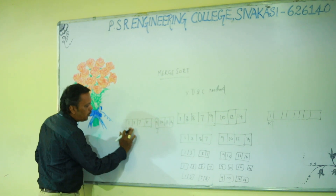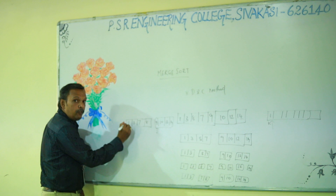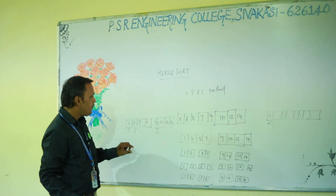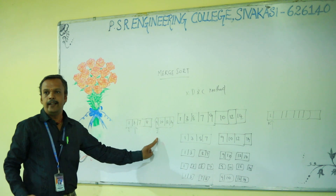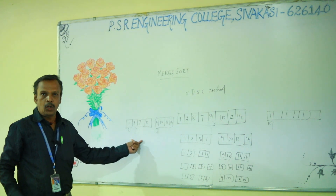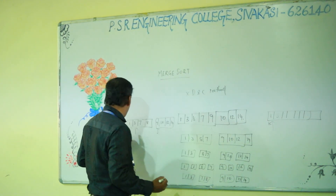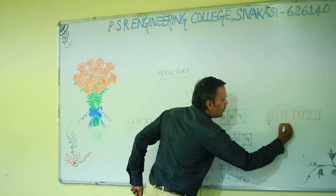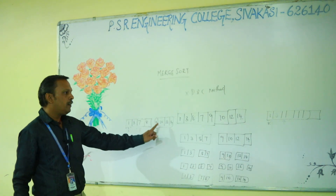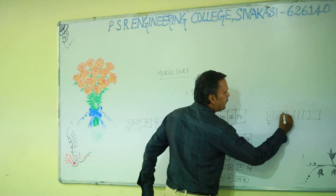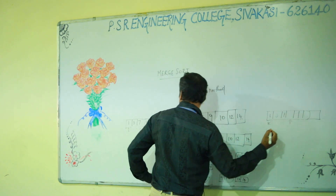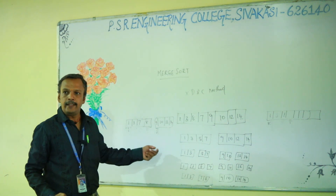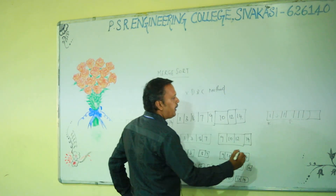Now we move to the next position in the array, because 1 has been inserted in the auxiliary array. The pointer position will be moved to 3. Again we compare 3 and 9 — 3 is the lower one, so 3 will be inserted in the array. Then the pointer moves to the next position. We compare 7 and 9 — 7 is less, so 7 will be placed here. The pointer position moves one position. Then 8 and 9 are compared — 8 is less, so 8 will be placed here.